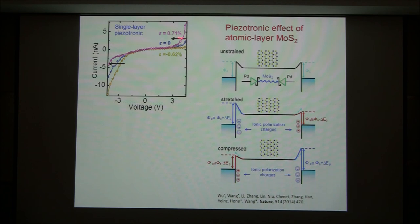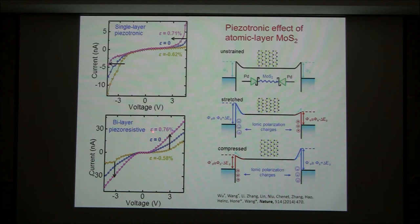This asymmetric distribution contributes to the piezotronic characteristic. Now with two layers — double layers — you should not even have a piezotronic effect. The blue curve is 0% strain. On 0.76% tensile strain, the current increases on both the forward and reverse bias — this is called symmetric change. This is a typical piezo-resistive effect; the single-layer shows a typical piezotronic effect. This result is for 2D materials.